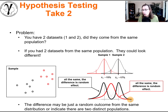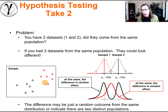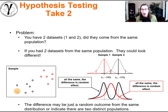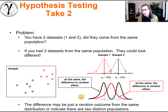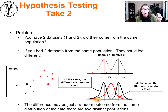Either the underlying population distribution for the entire area is wide and we happened to get samples that are high here by luck and low here by bad luck, making them look different — but actually the underlying distribution is the same. In other words, the difference in the distributions is not meaningful.